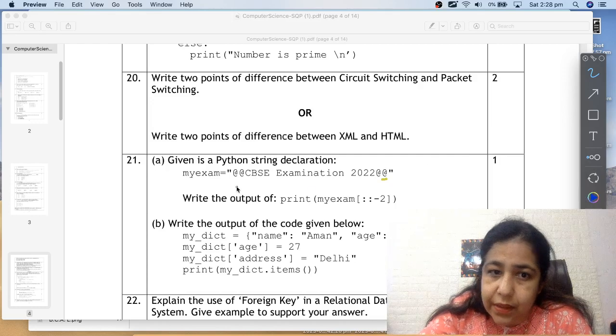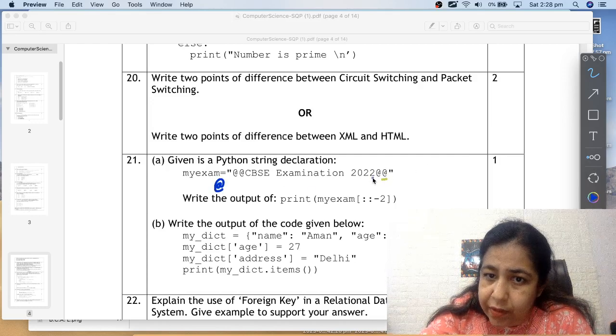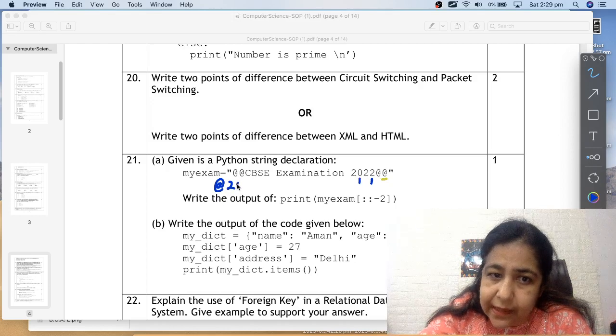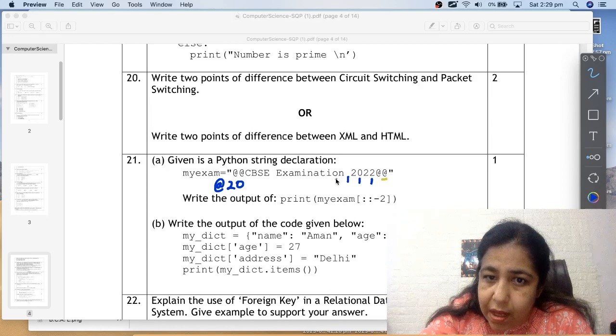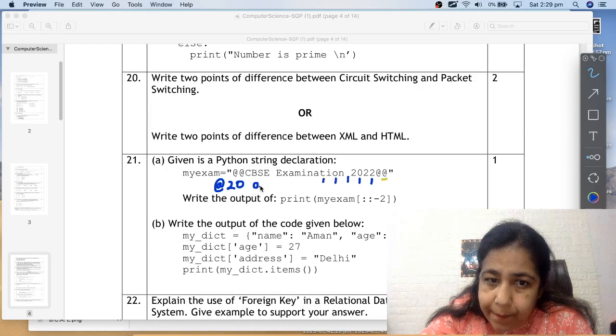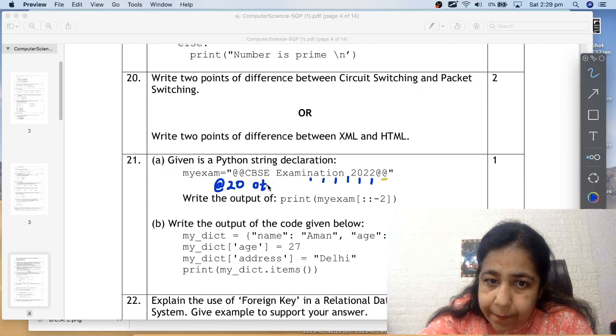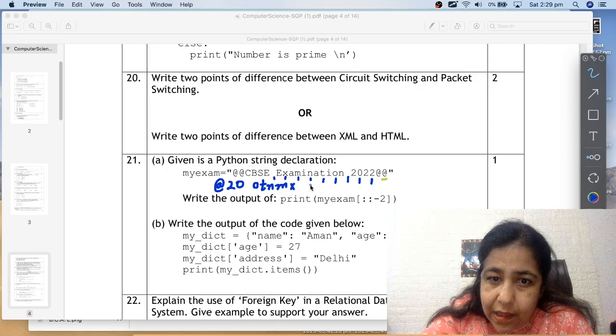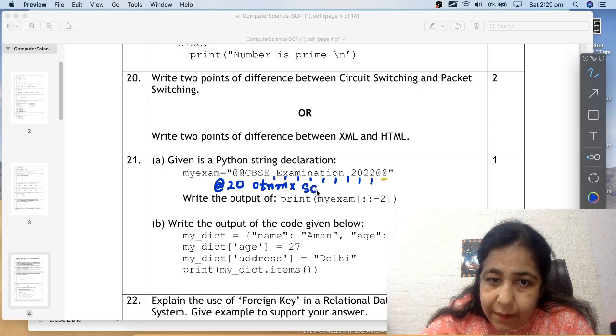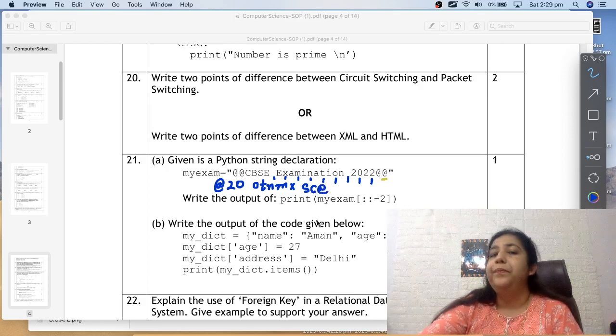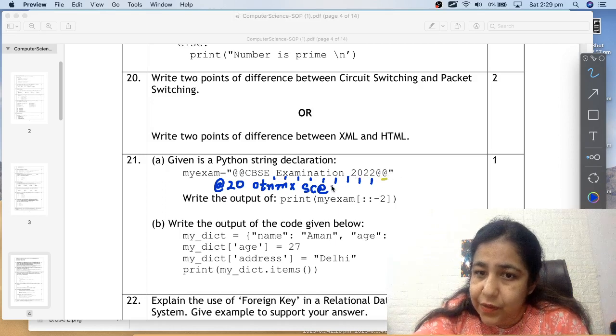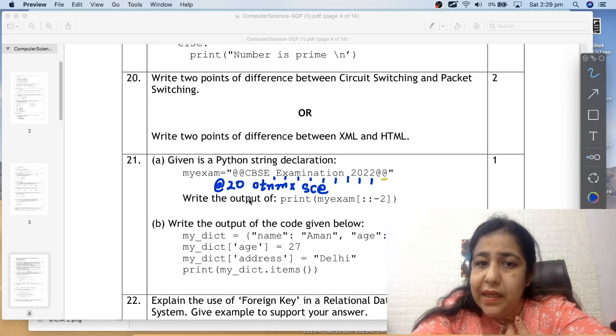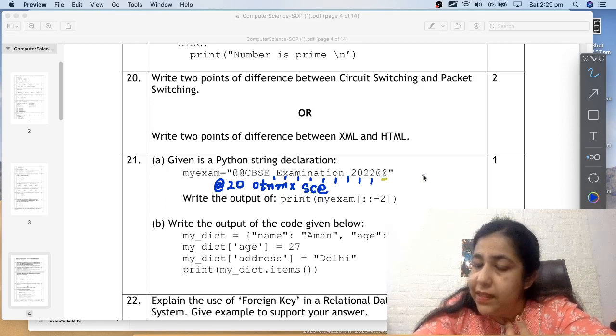So right to left we will go. The first character we will fetch is from here, the at the rate sign. Then minus two, we will reach here. From this place, what character will come? Two. Then minus two, we'll reach zero. Then minus two, we'll reach space. Then o, then t, then n, then m, then x, then space, then capital S, then capital C, and then at the rate sign. You have to pick characters from the whole string at a gap of two, but from back to front. Because the step is negative. Since the step is negative, this will be your output.